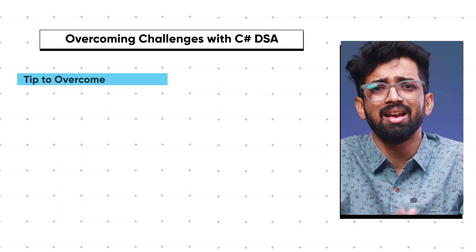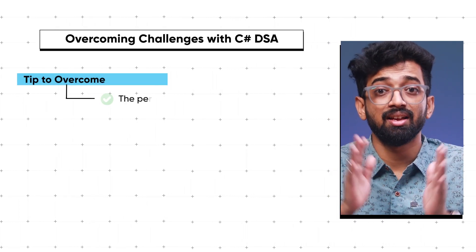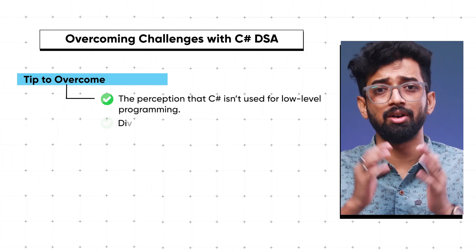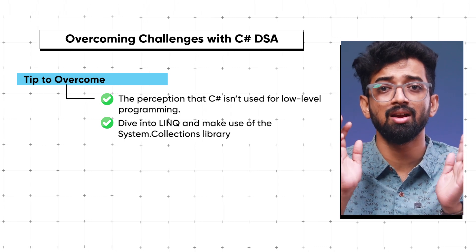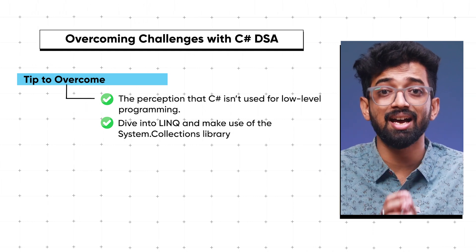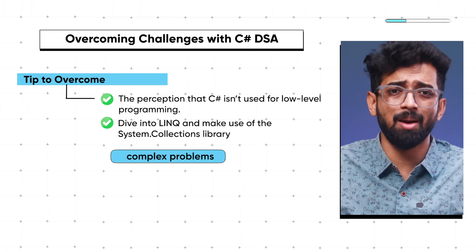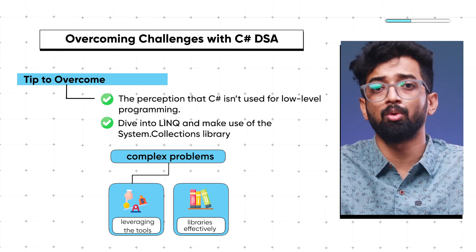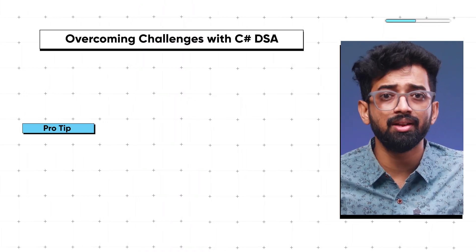Facing challenges while learning DSA in C#? You are not alone. Some say C# isn't suitable for DSA because it's high-level — let's debunk that myth. One challenge is the perception that C# isn't used for low-level programming, but if you deep dive into LINQ and make use of the System.Collections library, you will see that C# can handle complex problems just fine. It's all about leveraging the tools and libraries at your disposal effectively.